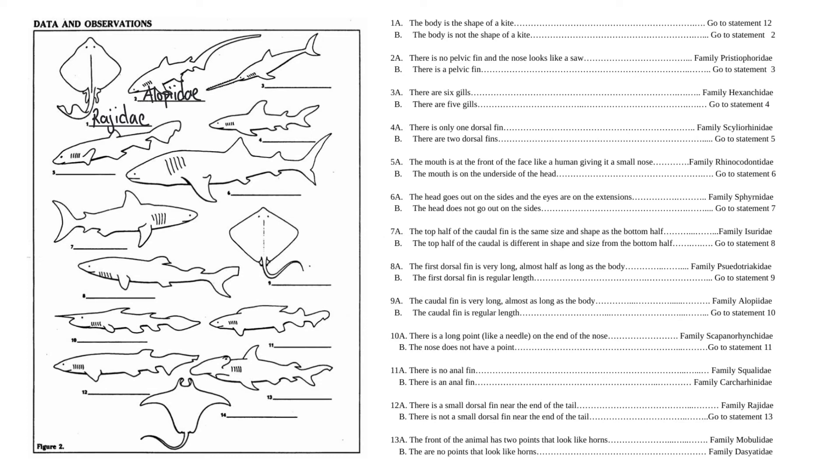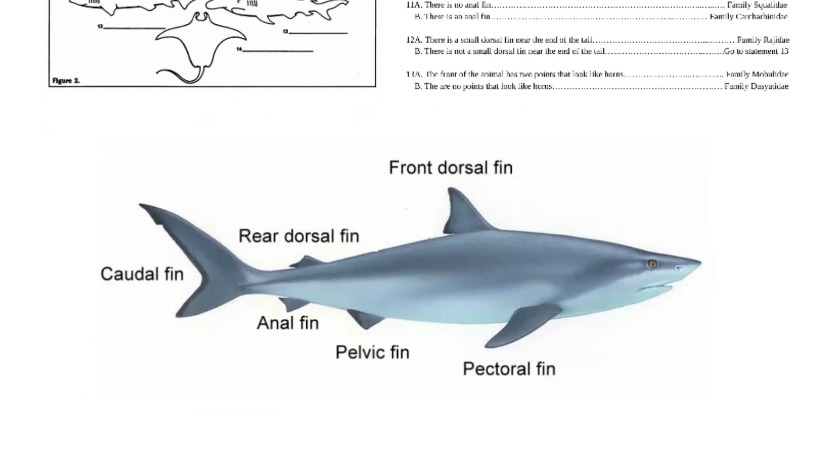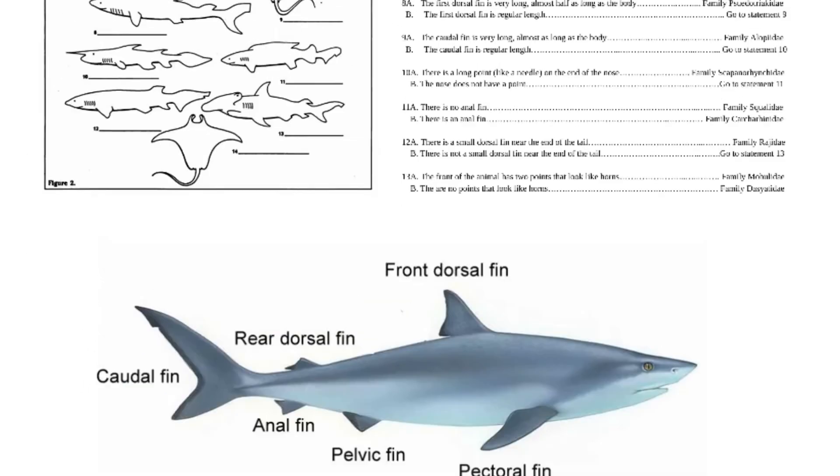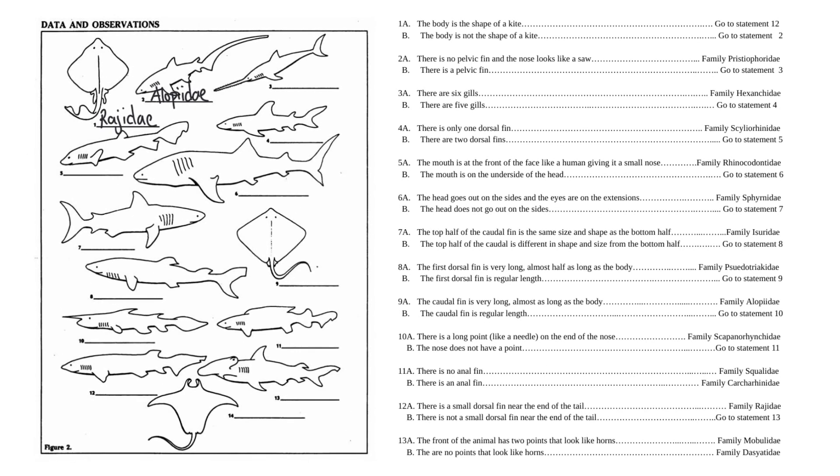So it can be a little bit time consuming to use dichotomous keys, but when you don't know an organism, it really is the most efficient way to figuring out what that is. So your task is going to be to complete the rest of this shark dichotomous key. You have the first two answers on my website. You have access to this shark diagram as well. So between that, you should be able to figure out the family to all 14 different sharks and rays on this diagram. Hopefully this will help, and thanks for watching.